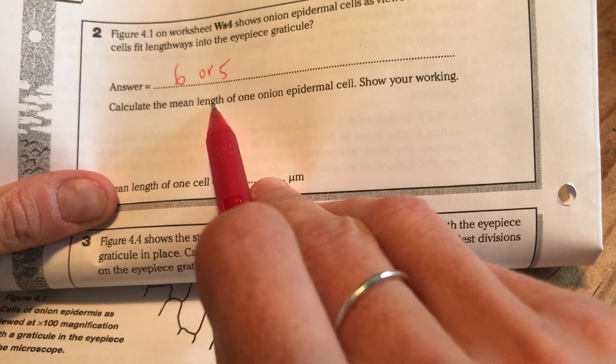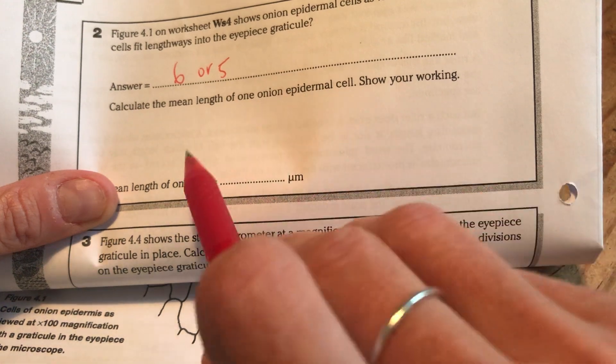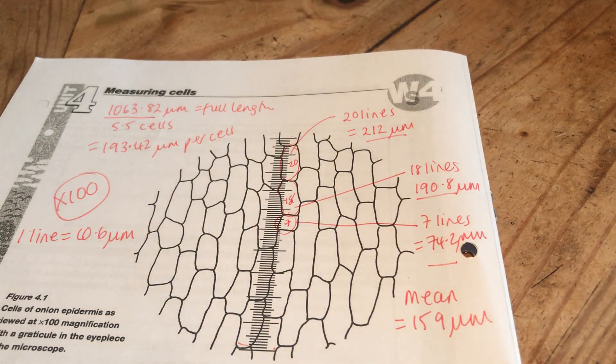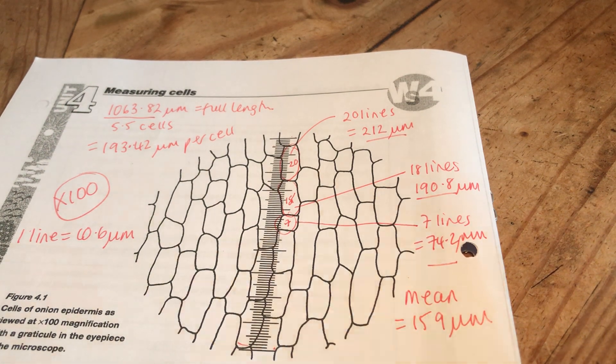So that's this question at the top here, isn't it? Calculate the mean length of one onion epidermal cell. So we've got two methods of doing that. Go back and watch the video again if you're not quite sure what I was doing there.